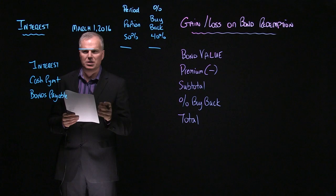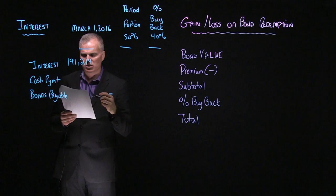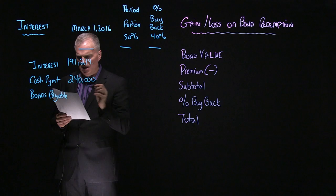So we take a look at the effective interest schedule. The information, as I mentioned, comes from the second period. So the interest is $191,214. I'm not going to put the pennies in here. You guys can see that with the solutions. The cash payment, $240,000.